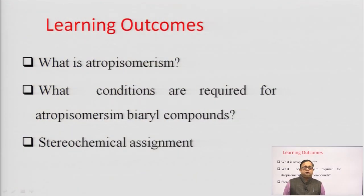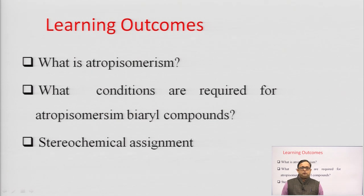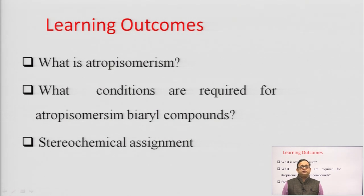In our previous lectures, we have discussed about the geometrical isomerism, conformational isomerism, what are the various conditions required to exhibit geometrical isomerism, conformational isomerism, what are the hindrances, what are the significance and what are their various uses. Now in this lecture, we are going to discuss about the atropisomerism.